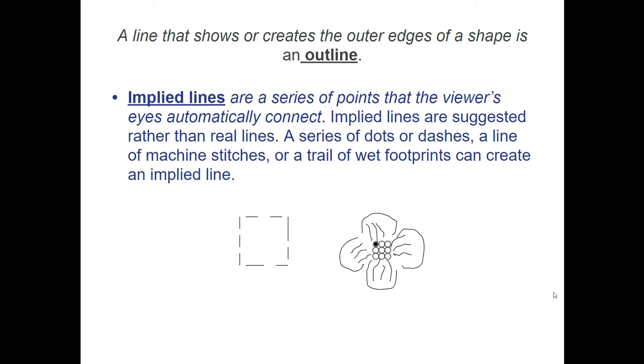A line that shows or creates the outer edge of a shape is called an outline. Implied lines are a series of points that the viewer's eye automatically connects. Implied means it's suggesting something rather than real lines connecting it. Think of dots, dashes, stitches in clothing, or a trail of wet footprints.